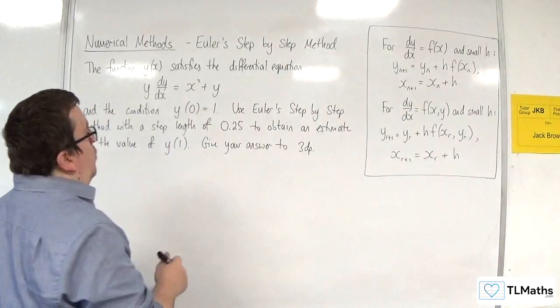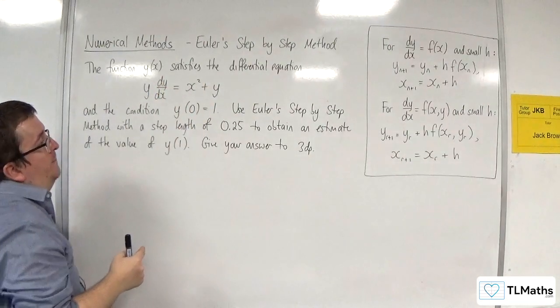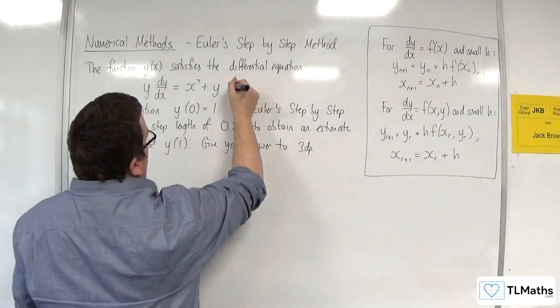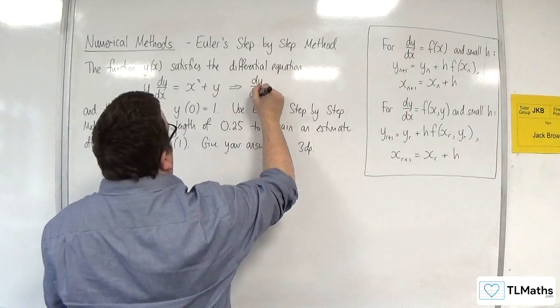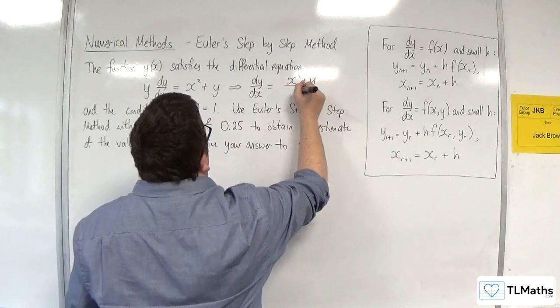The first thing is that you want to make sure your differential equation is in the correct format. We need it as dy by dx equals some function of x and y. So I'm going to divide through by y and get dy by dx is equal to x squared plus y over y.